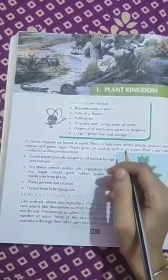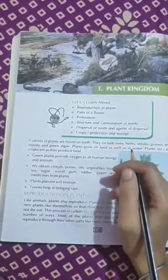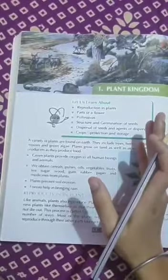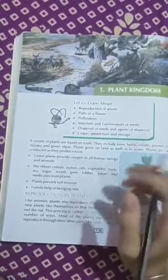Plants prevent soil erosion. So what is soil erosion? The removal of upper layer of soil by agents like wind and water is called soil erosion.